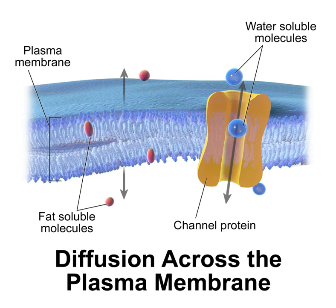Lipid vesicles or liposomes are approximately spherical pockets enclosed by a lipid bilayer. They are used in laboratories to study the effects of chemicals in cells and to gain insight into cell membrane permeability. Lipid vesicles are formed by suspending a lipid in an aqueous solution then agitating the mixture through sonication. By measuring the rate of efflux from inside the vesicle to the ambient solution, researchers can better understand membrane permeability. Proteins can also be embedded into the membrane through solubilizing desired proteins in the presence of detergents, providing researchers a tool to examine various membrane protein functions.